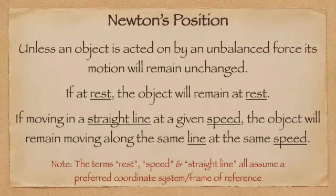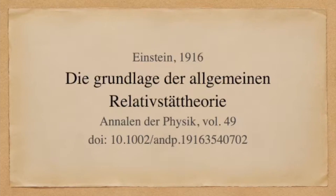Looking more closely at Newton's position, Einstein realized that his first law of motion contained some assumptions. The phrases 'at rest,' 'constant speed,' and 'straight line' all assumed a preferred non-accelerating frame of reference. Einstein questioned this assumption and set himself the challenge of reformulating the laws of physics such that they would remain valid regardless of the frame of reference the observer was operating in. In 1916, he published his results in The Fundamentals of the Theory of General Relativity.